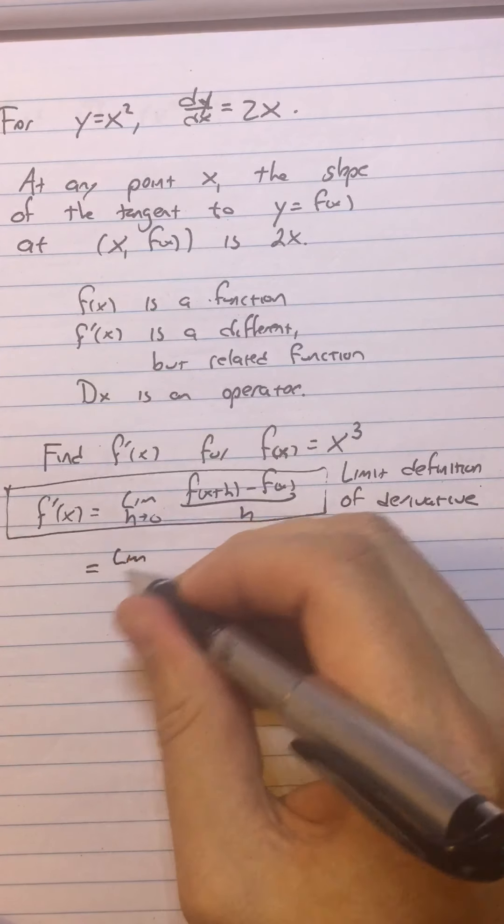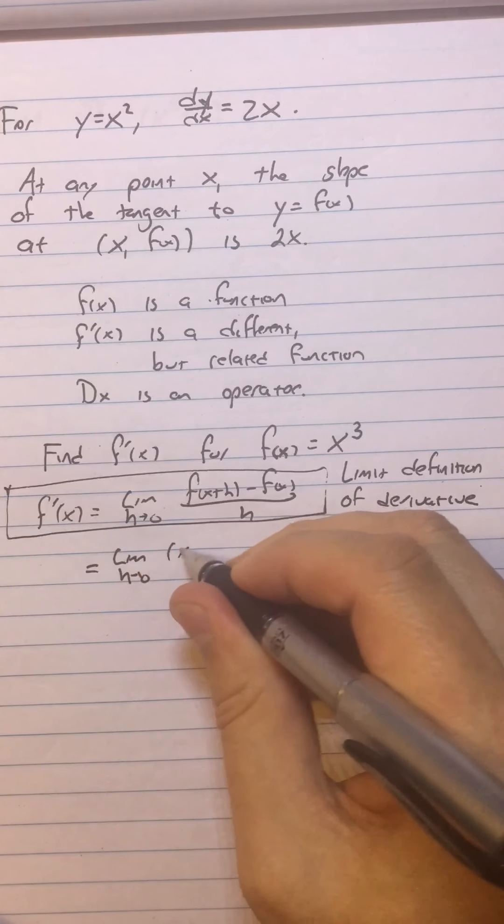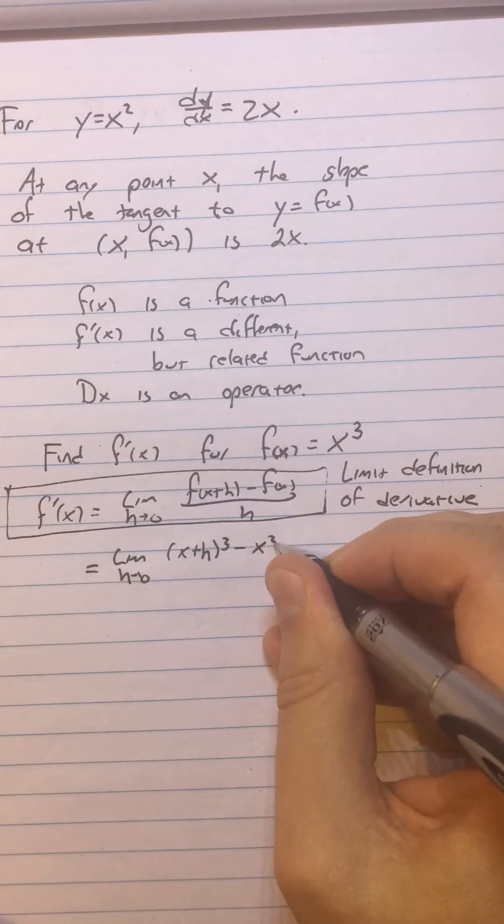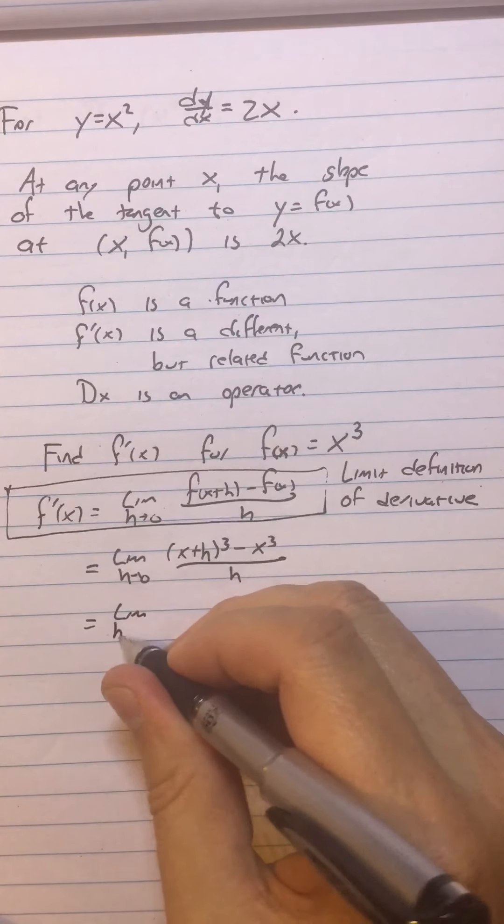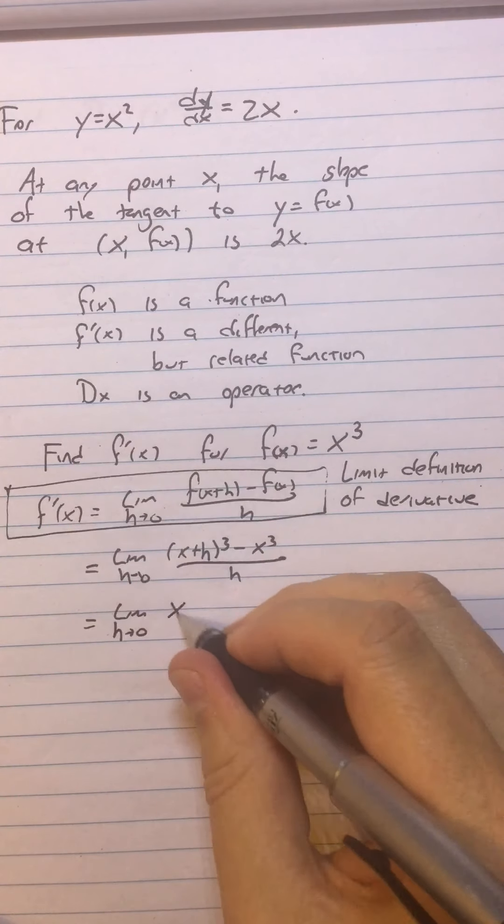So in our particular case, that means the limit as h approaches 0 of x plus h cubed minus x cubed over h. You do enough of these things, you're going to notice a lot of patterns. And in the future, we're going to take advantage of those patterns to simplify the work enormously.